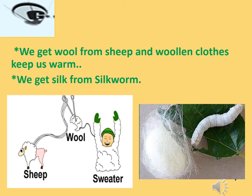After shearing, the fleece is woven on a machine called a loom, and then it is knitted into a sweater. So in this process, three steps are followed: first is shearing, second is weaving, and third is knitting.